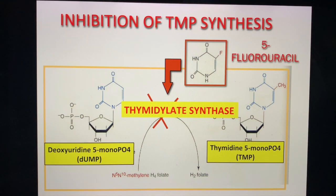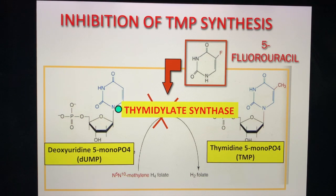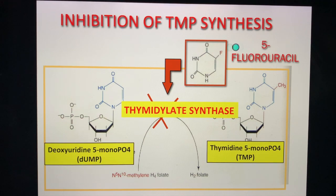Another clinical pearl: dUMP (deoxyuridine-5-monophosphate) is converted to TMP (thymidine-5-monophosphate) by the enzyme thymidylate synthase. Memorize this — it will come out on your boards. The chemotherapeutic drug 5-fluorouracil (5-FU) inhibits thymidylate synthase, thereby inhibiting the synthesis of TMP.